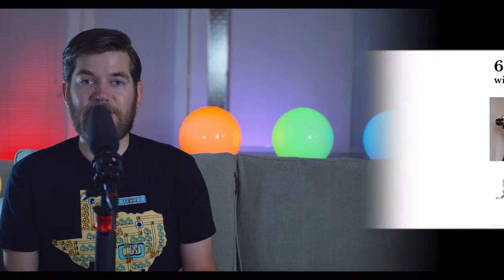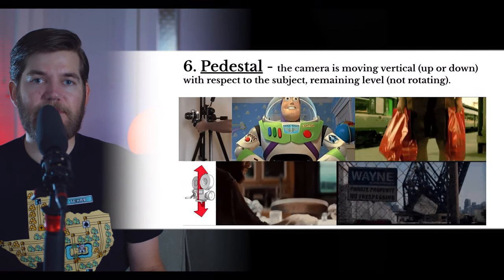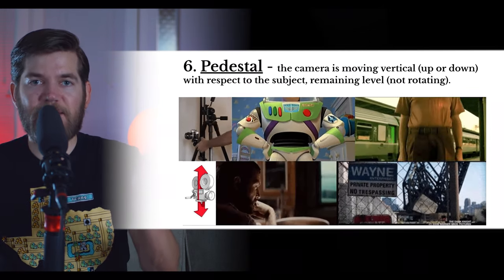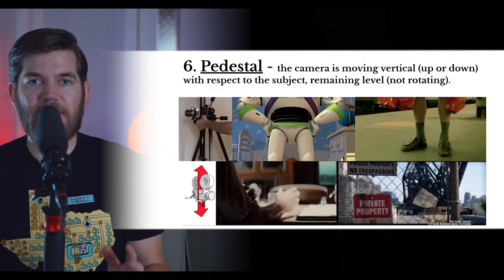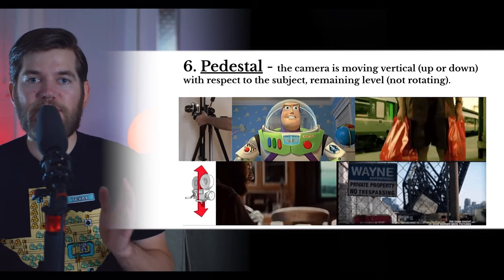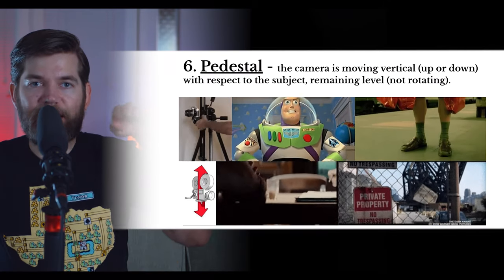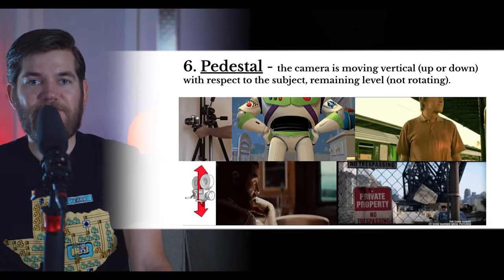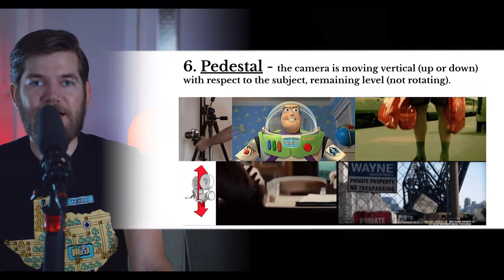We are now exiting the section of our vocabulary that deals with a fixed position for the camera — the camera can now be moved around a location. Our next term moves the camera up and down and is not to be confused with a tilt. It is the pedestal. The pedestal is moving the camera vertically up and down. The subject will remain level — you are not rotating the camera. You are moving up and down only, staying level with your subject. The pedestal can reveal more within the frame as the camera moves up and down.